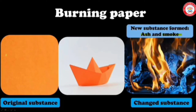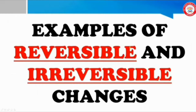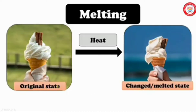Here the change is a permanent one, so this type of change is known as irreversible change. Let us discuss more examples. The first one: melting of ice. When we are heating, the ice changes into a melted state.